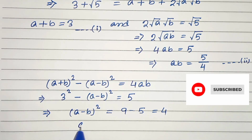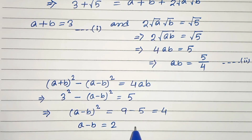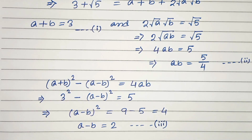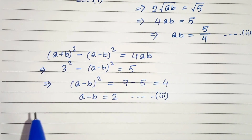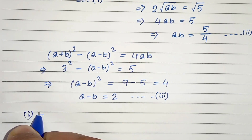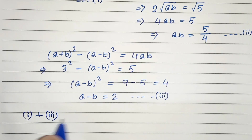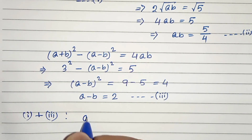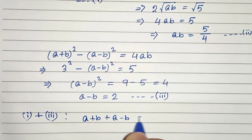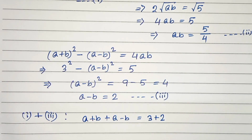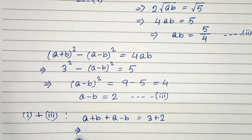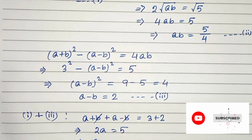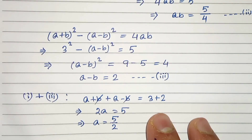So we can write a minus b equals 2 — this is equation 3. Now let's add equation 1 and equation 3: a plus b plus a minus b equals 3 plus 2. The b's cancel, so 2a equals 5.